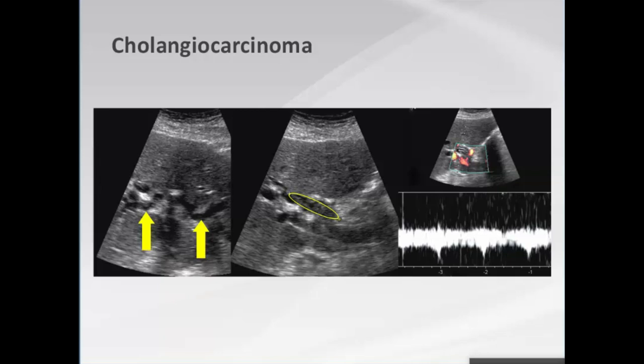Looking for new biliary dilation — seen here intrahepatically in both lobes — you must follow the ducts centrally to determine if they communicate. At the level of the common duct, polypoid papillary excrescences were seen within the lumen: is that sludge or tumor? Doppler and contrast ultrasound are very helpful here. Even with spectral Doppler, don't rely just on color — you need a spectral tracing. Arterial flow was demonstrated, and this was a polypoid cholangiocarcinoma.